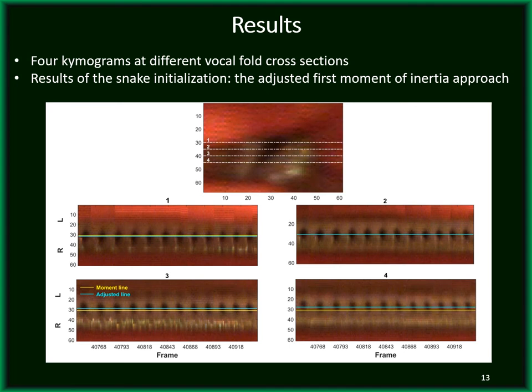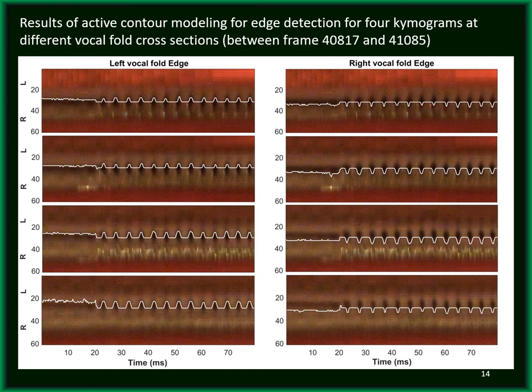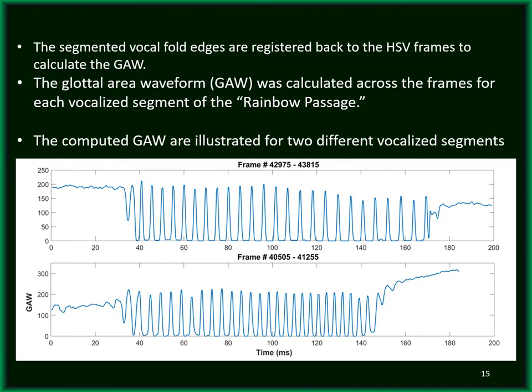Moving to the results section: the four kymograms in this slide are extracted at four different vocal fold cross-sections shown on the top image. The kymograms are extracted from the same localized segment over 200 frames. You can see the first moment of inertia shown in yellow and the adjusted moment line shown in light blue for each kymogram. After snake initialization, the active contour modeling approach was applied to the right and left edges of the vocal folds. The extracted left edges of the vocal folds can be seen in the kymograms on the left, and the right edges are shown in the kymograms on the right.